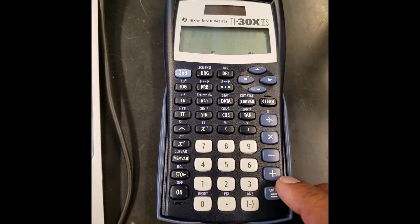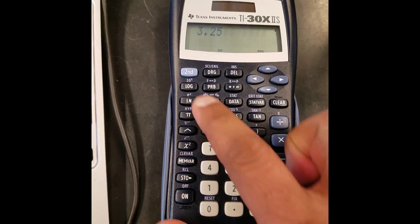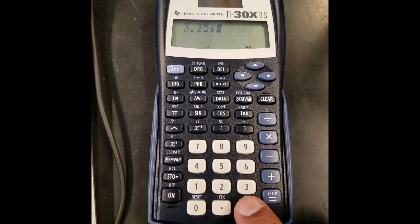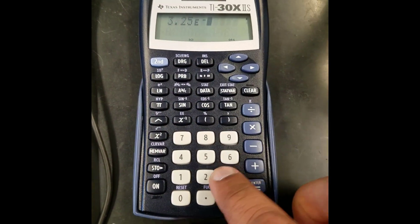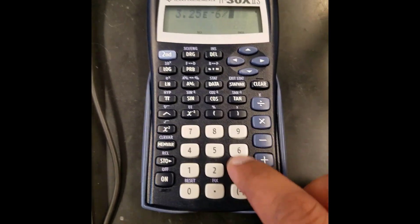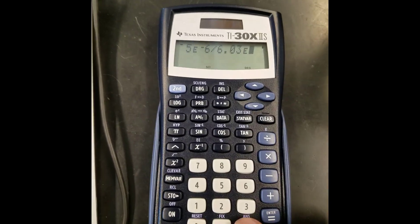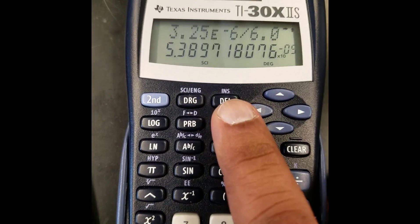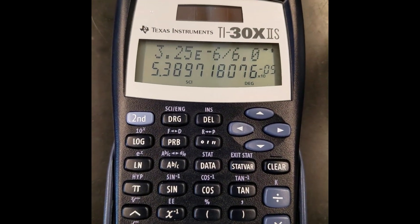So in the second problem, it is 3.25, second function E. Times 10 to the negative 6 power. And you divide that by 6.03 times 10 to the negative 2. And you hit equals. Notice no times, no 10. And the answer is 5.39 times 10 to the negative 5.